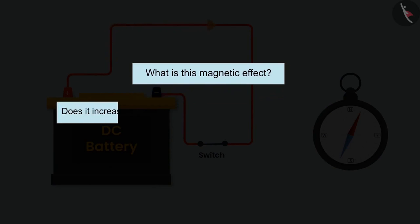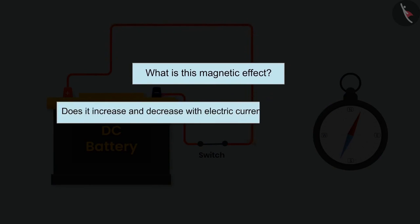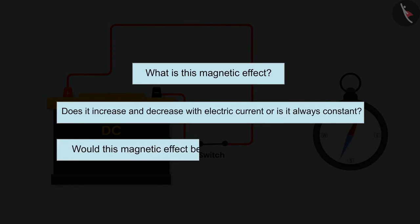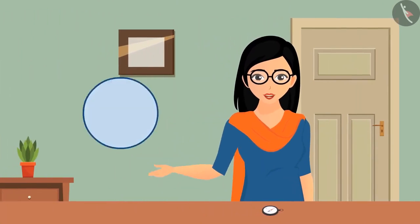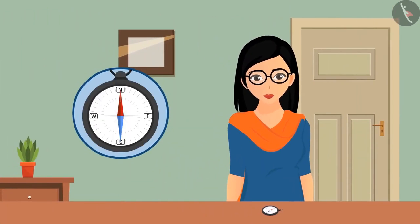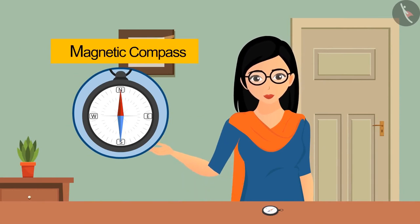Does it increase and decrease with electric current, or is it always constant? Would this magnetic effect be like a magnet or different from it? Similar questions will be emphasized in today's video. So first of all, we need to know what's this small round looking device. This device is called magnetic compass.